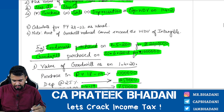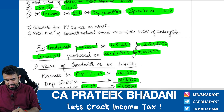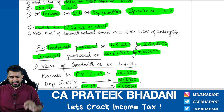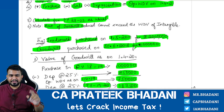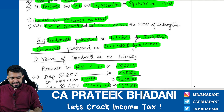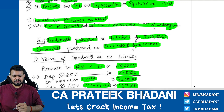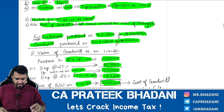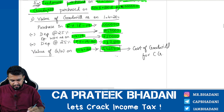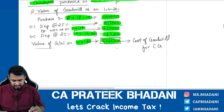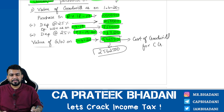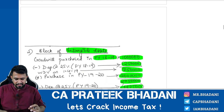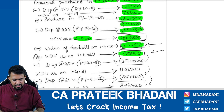From previous year 2021-22 onwards, do the normal calculation as usual. However, note that the amount of goodwill to be reduced cannot exceed the WDV of the intangible asset block. For example, what if the WDV of goodwill comes to ₹25,62,500 instead of ₹5,62,500?